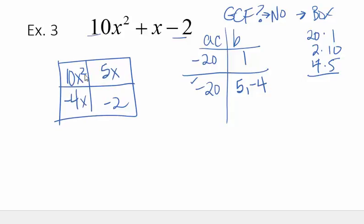We do greatest common factor by column and by row. This first column, greatest common factor between these two is a 2x. Between 5x and 2 is just a 1, and that 5 is positive. Between these two terms, the greatest common factor is a 5 and an x. And between these two would be negative 2. So my factors then are 2x plus 1 and 5x minus 2.